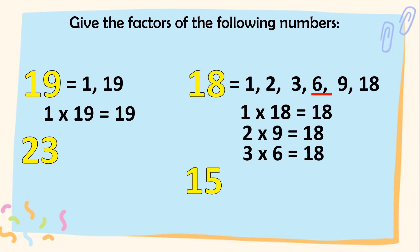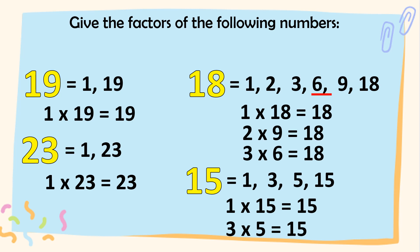Next is 23. Tama. It's 1 times 23 is 23. Meron pa ba? Wala na. So, arrange it to natin. 1, 23. How about 15? Tama. Ang factors nito ay we have 1 times 15 is equal to 15, at 3 times 5 is 15. Meron pa ba? Wala na. So, ia-arrange natin ito dito. We have 1, 3, 5, at 15.